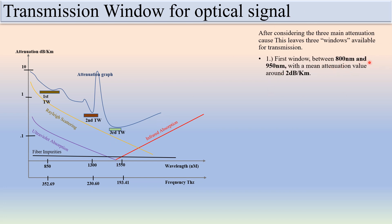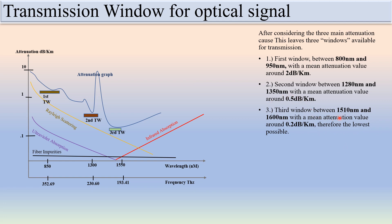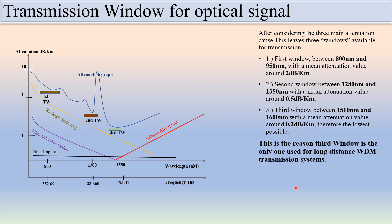The first window is between 800 nanometers and 950 nanometers with a minimum attenuation value of around 2 dB per kilometer. The second window is between 1280 nanometers and 1350 nanometers with a mean attenuation value of around 0.5 dB per kilometer. The third window is between 1510 nanometers and 1600 nanometers with a mean attenuation value of around 0.2 dB per kilometer — the lowest possible. This is why the third window is the only one used for long-distance WDM transmission. Thank you.